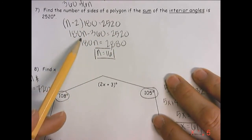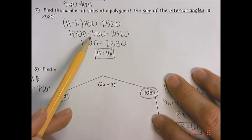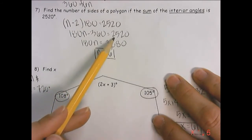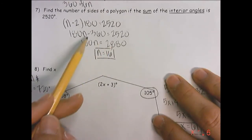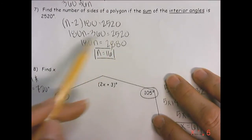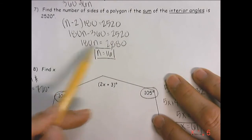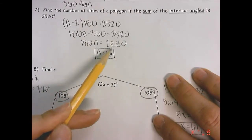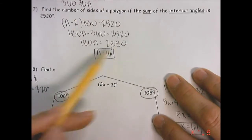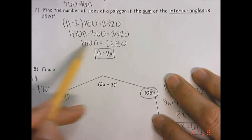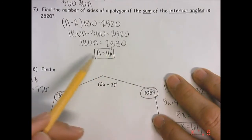Again, I'm going to distribute that 180 and end up with 180n minus 360 equals 2520. I'm going to add 360 and add 360, end up with 180n equals 2880. Divide by 180, divide by 180, and n equals 16.